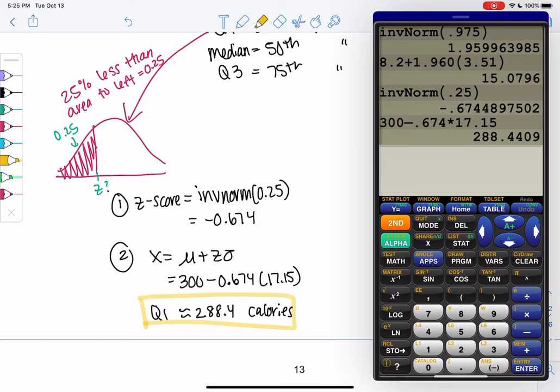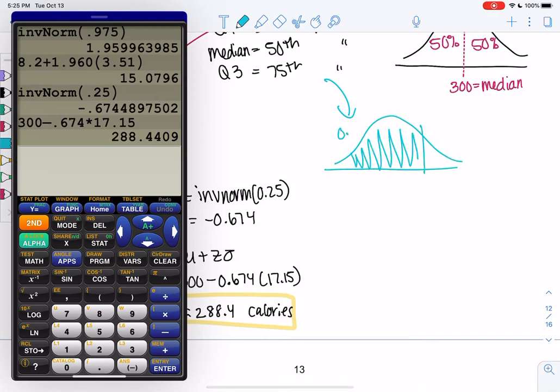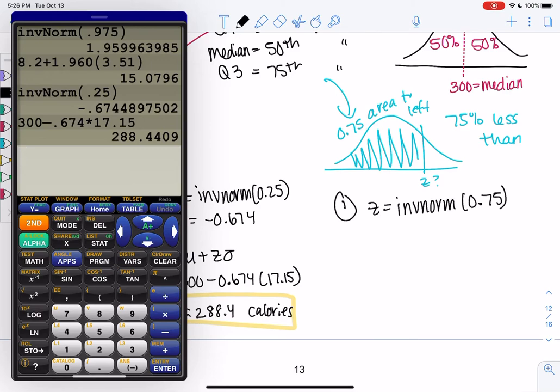Should we try Q3? It'll be really similar. You can hear my dog shaking in the background. So Q3, same idea, but 75%. So 75% less than, or 0.75 is area to the left. And we don't know the z-score. So same idea, we'll do inverse norm to find the z-score. Inverse norm to the left was 0.75, so we already know that. Second distribution, inverse norm, 0.75. And we get 0.674. It's actually, because of symmetry, that's actually why we're getting the same number. There's some symmetry here.